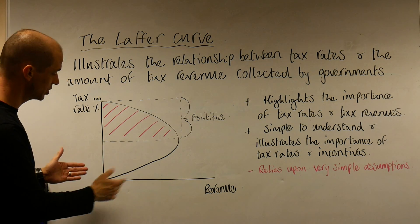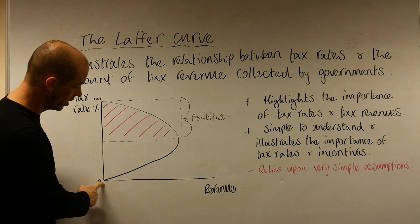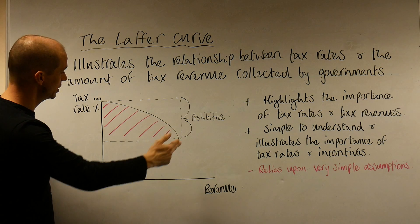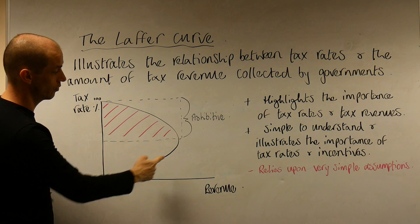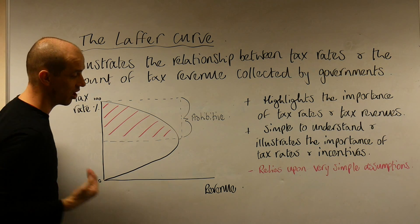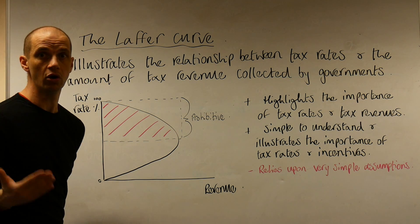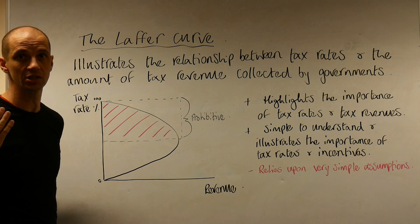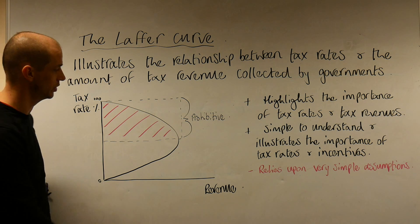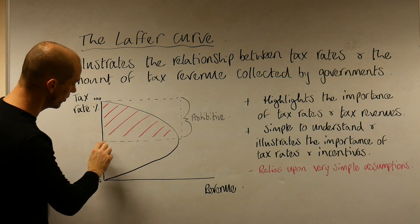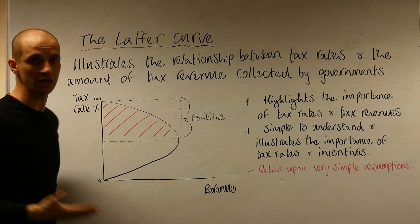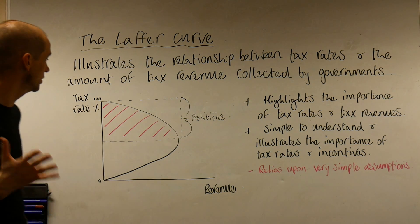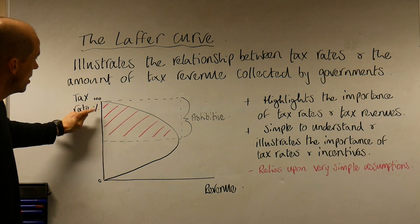We can see correspondingly this curve, which obviously reaches the highest point of tax revenue — that is, tax receipts by the government — somewhere in the middle of this spectrum that we have here.